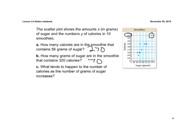Part C says, what tends to happen to the number of calories as the number of grams of sugar increases? As the grams of sugar increase, we see that the calories also increase. We have this little correlation there, which we'll show on the next slide. As the sugar increases, the calories also increase.